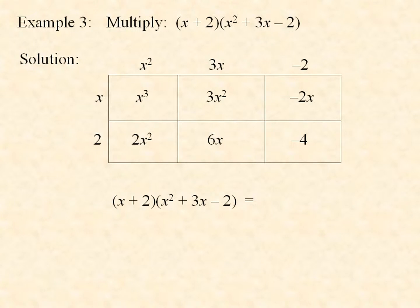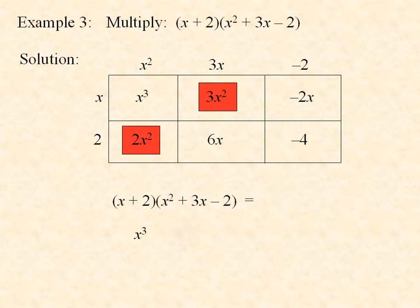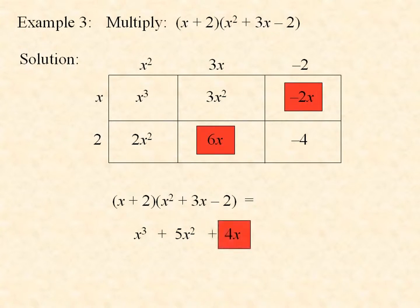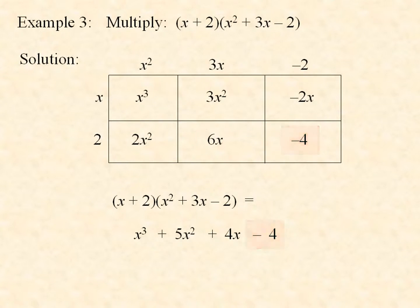Now we have some like terms, so this product can be simplified by adding them. x cubed is a loaner. The 3x squared and the 2x squared are like terms; they can be added to 5x squared. The negative 2x and the 6x are like terms; they can be added to give 4x. And finally we have the negative 4, which is another loaner.